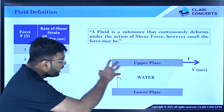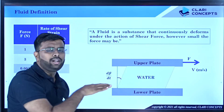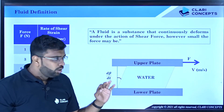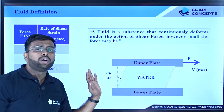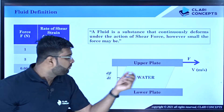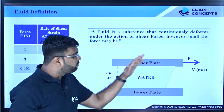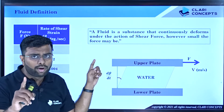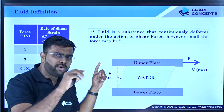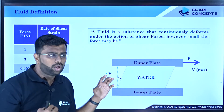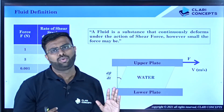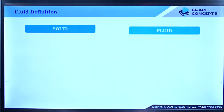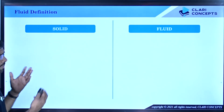This means that a fluid body subjected to a shear force — a force parallel to the plane — will continuously deform. It will not stop. However small the shear force, continuous deformation will continue. This is the exact technical definition of a fluid. Now we see what is the technical difference between fluid and solids based on what we have studied.